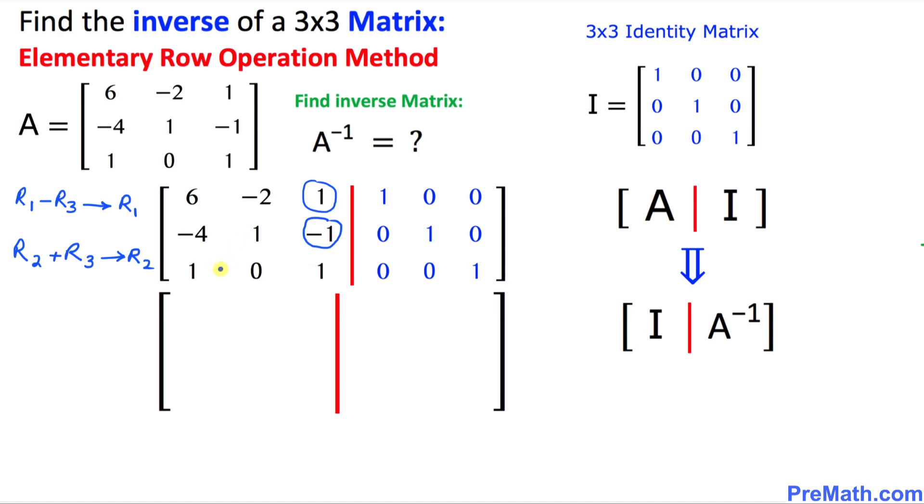So row 1 is going to become 5 negative 2 0 and on this right hand side is going to become 1 0 negative 1. We will be looking at the second row as negative 3 1 0 and on the right hand side this is going to become 0 1 1 and leave this row number 3 as it is. So 1 0 1 and this is going to become 0 0 1.